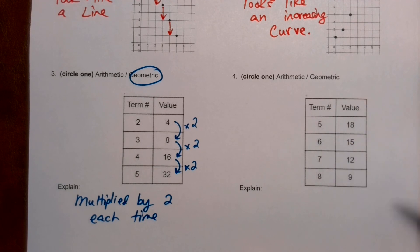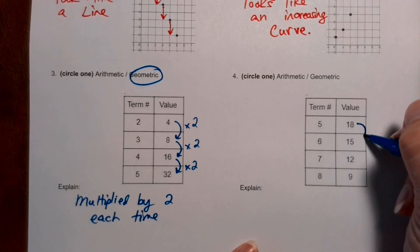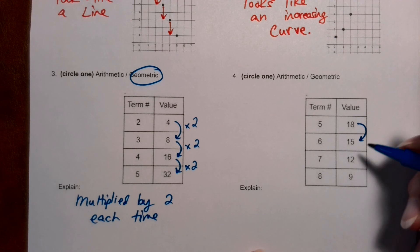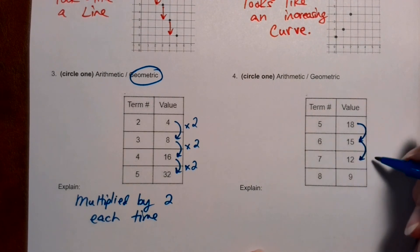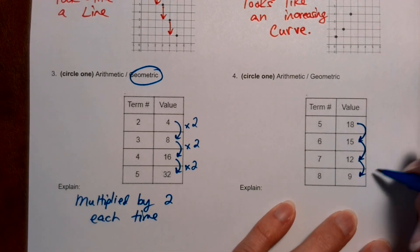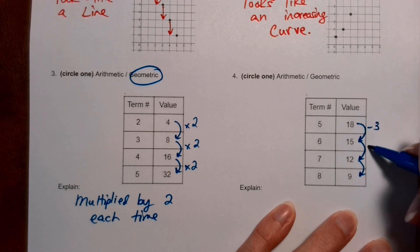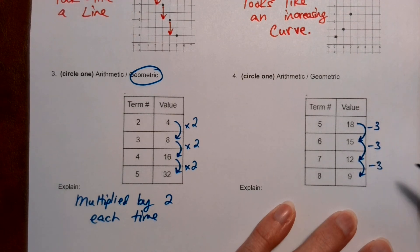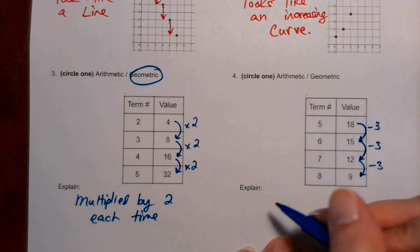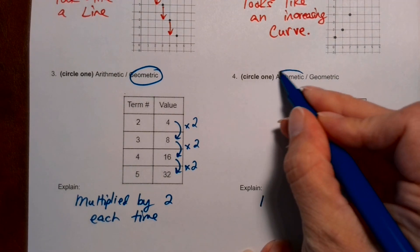Okay, number four. Let's go ahead and study these. Eighteen is going down to 15. Fifteen is going down to 12. This looks like they're decreasing. Subtracting by three each time. Okay, so I'm going to say that this one is arithmetic.